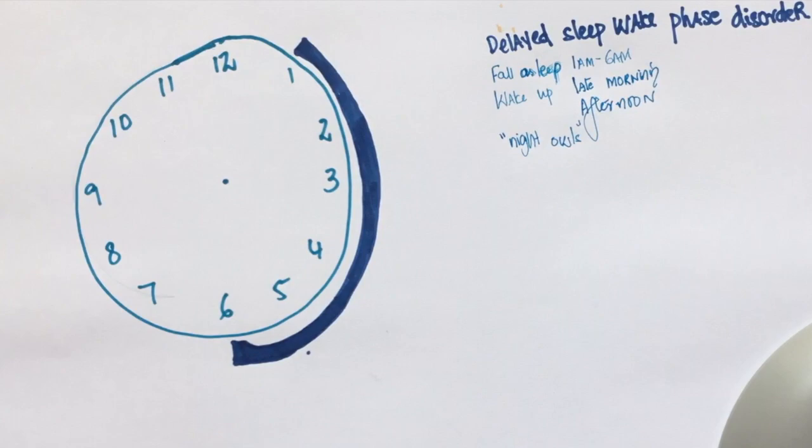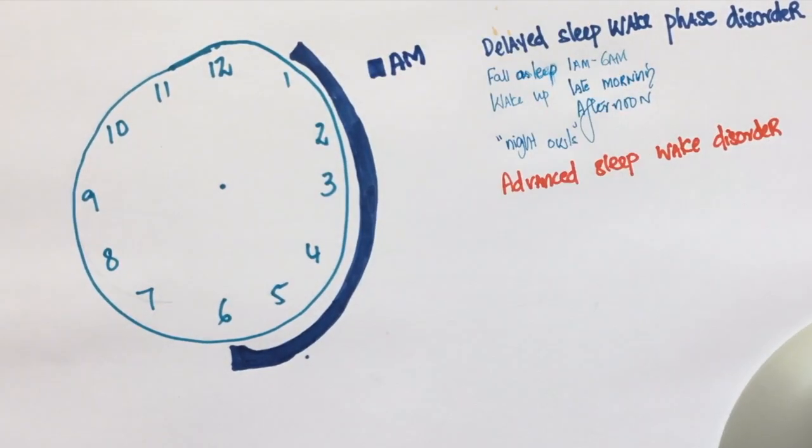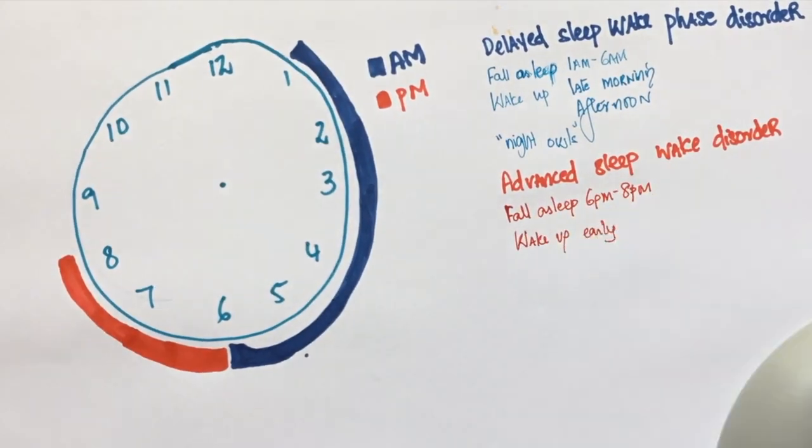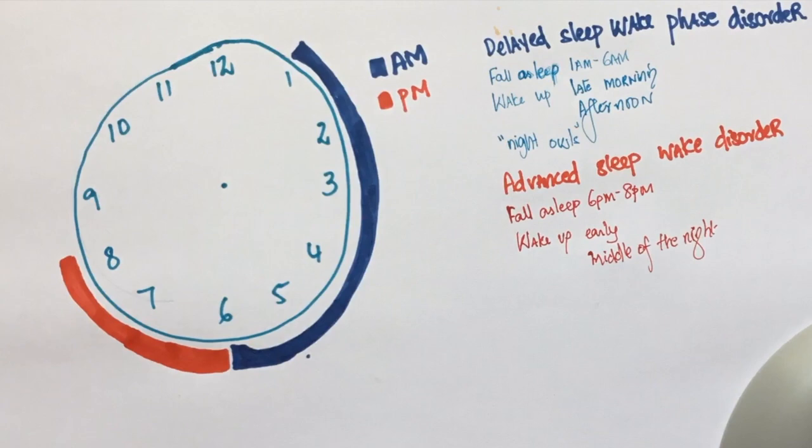Advanced sleep wake phase disorders are morning birds. They cannot stay awake beyond 7 pm. They usually go to sleep somewhere around 6 pm to 8 pm. Since they are going to sleep at this time, they tend to wake up extremely early in the morning and sometimes even in the middle of the night.